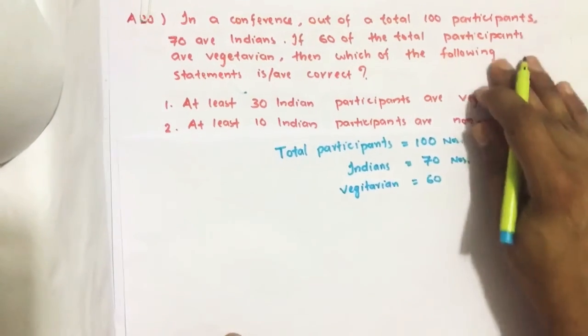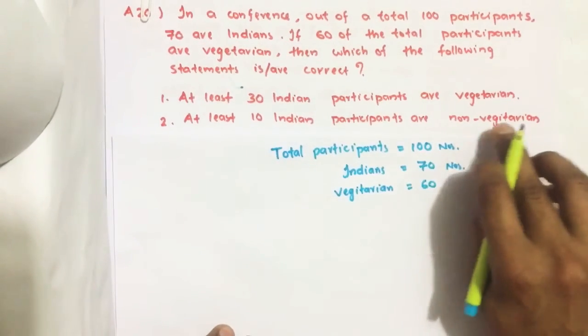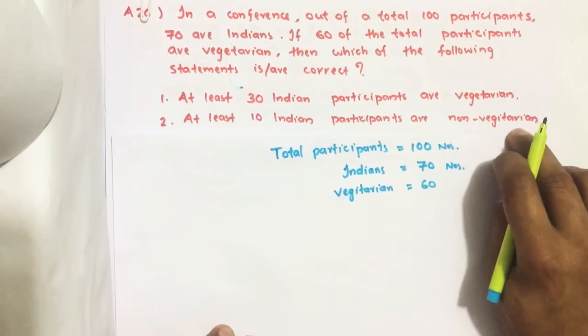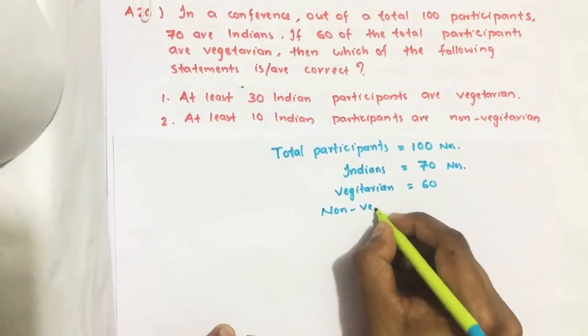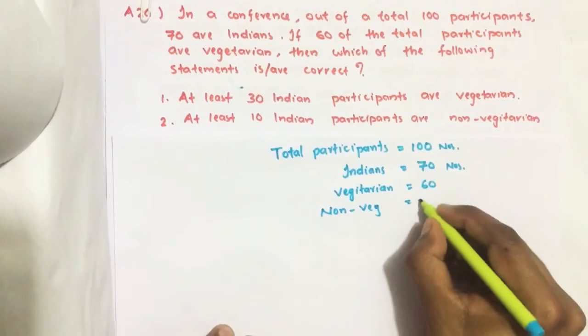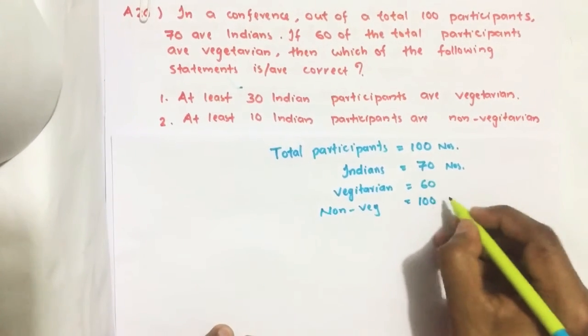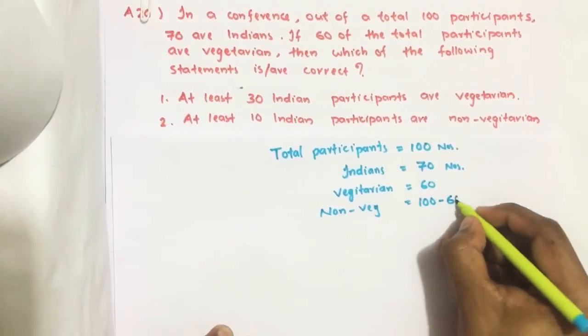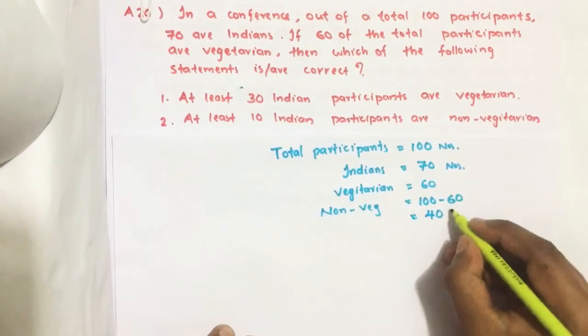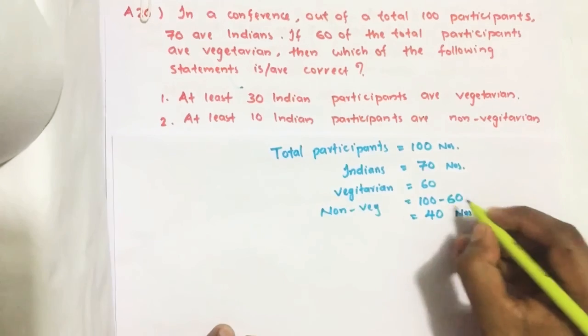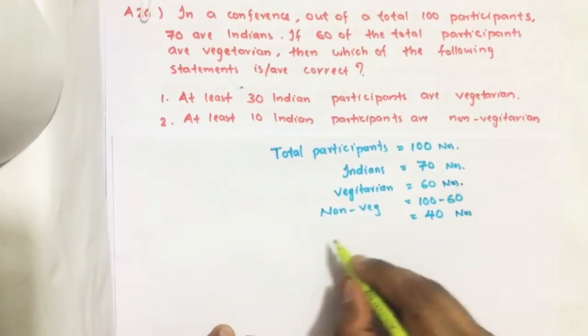So for the second statement, we need to know how many non-vegetarians are there. So non-veg, total 100 from that we are deducting this vegetarian. We get 40 number of non-vegetarians.